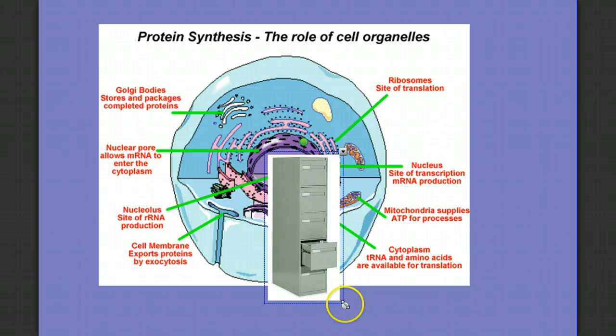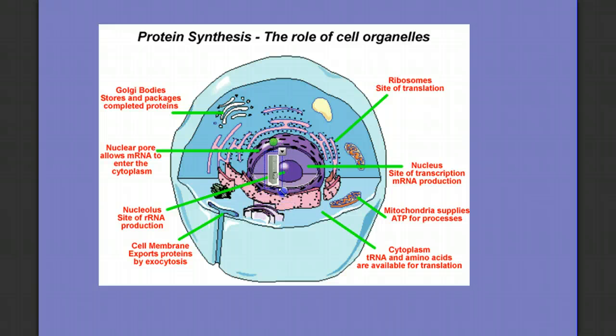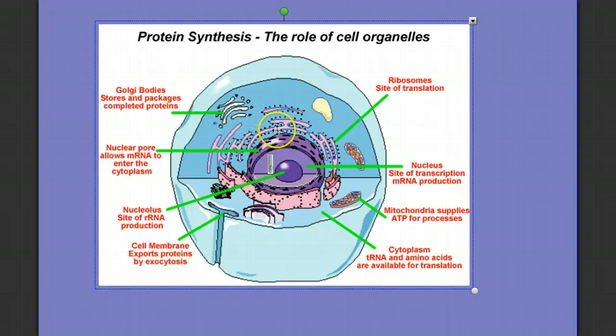So we need to make a copy, or in this case a complementary strand, of messenger RNA that can leave the nucleus and travel to the ribosomes to be used to construct a protein. The process of making this messenger RNA strand is called transcription.